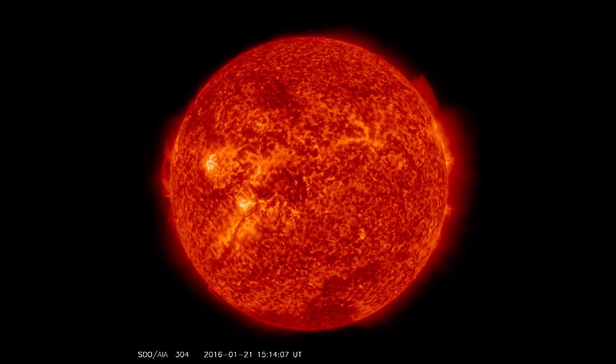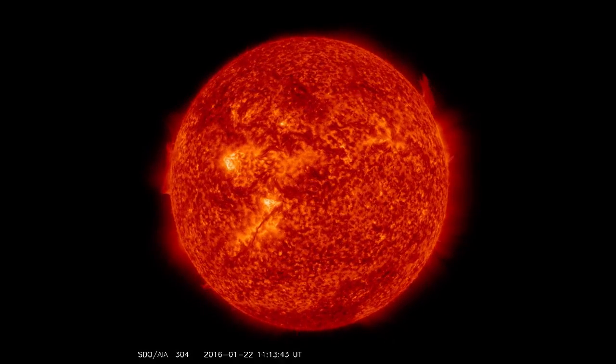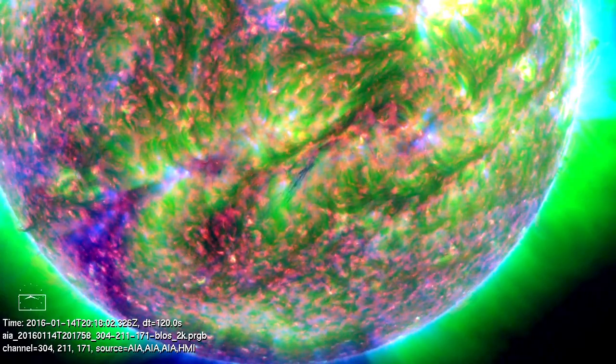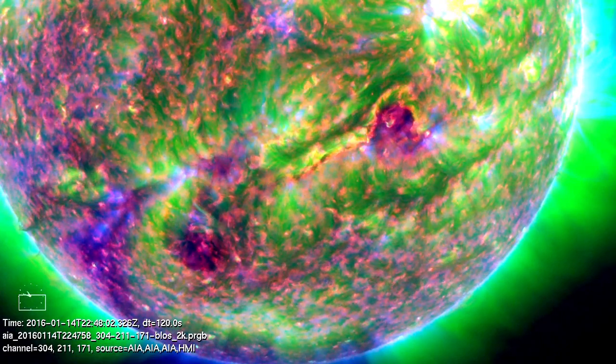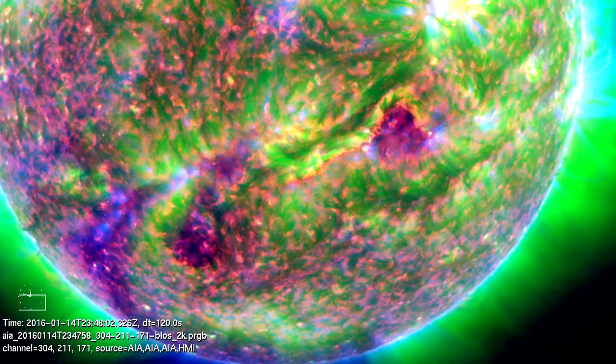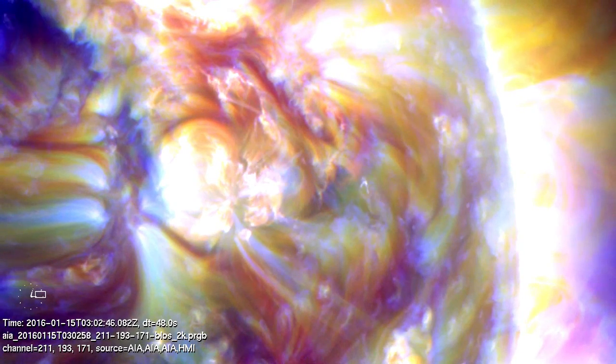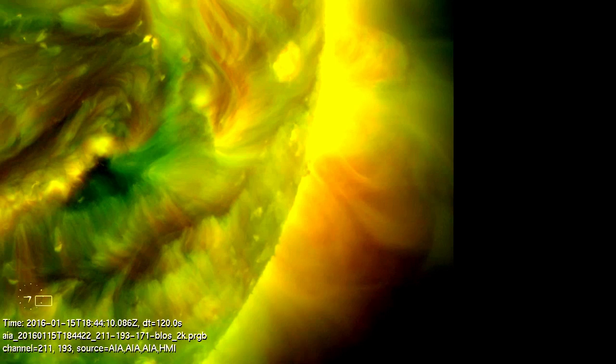Now here we are back again at the corona, the surface or skin of the Sun. Technically you could say the entire Oort cloud is the surface of the Sun. Light is in all things except that which light is not.